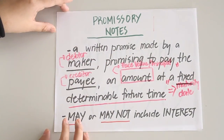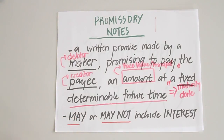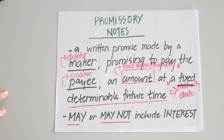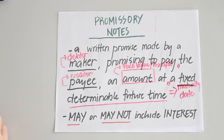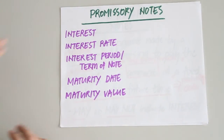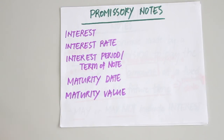Looking into the definition, we see that there are constant elements to a transaction involving a promissory note. First, there would always be a maker or debtor and a creditor or payee. There would always be an amount owed — the face value or principal — and a fixed determinable future time, or the maturity date. Other important terminologies include interest, interest rate, interest period or term of note, maturity date, and maturity value.